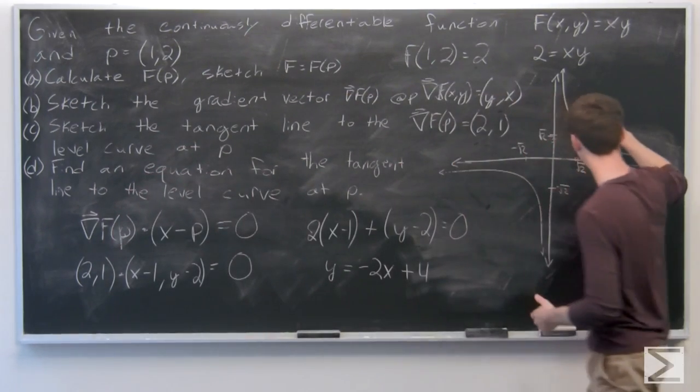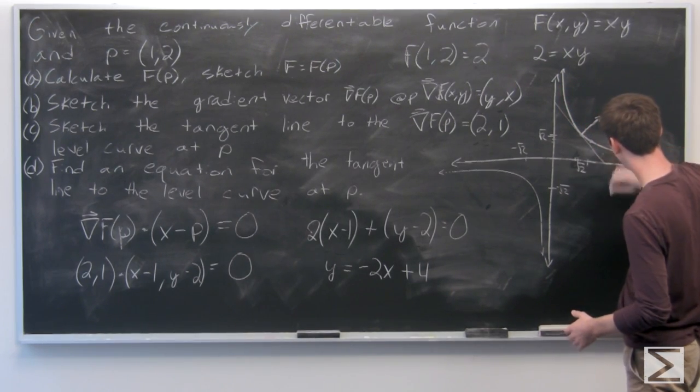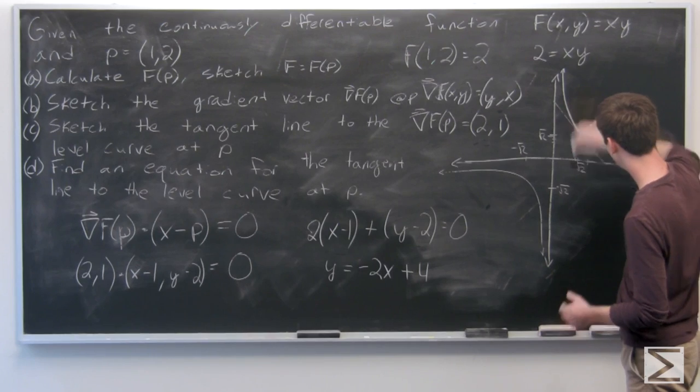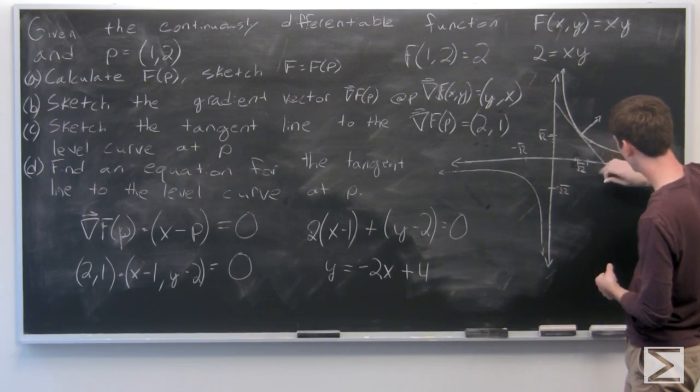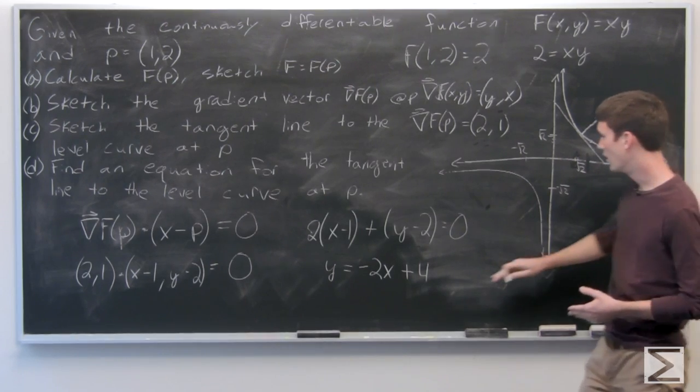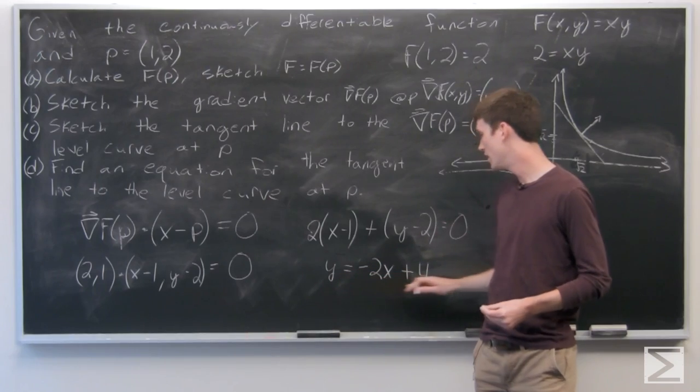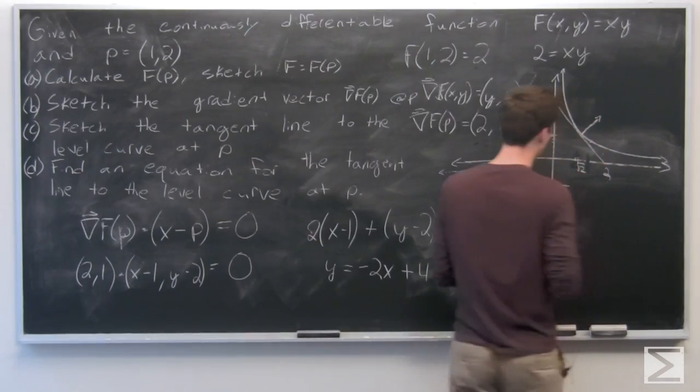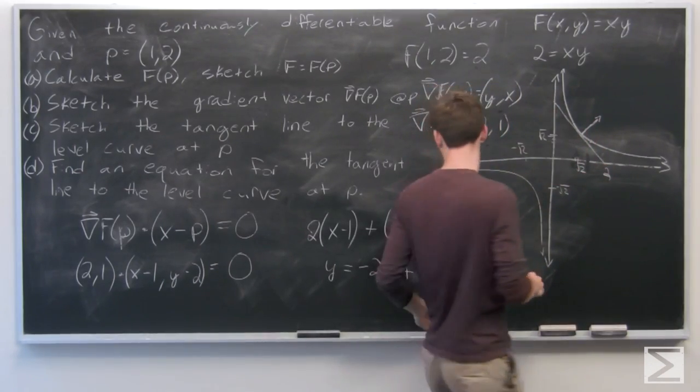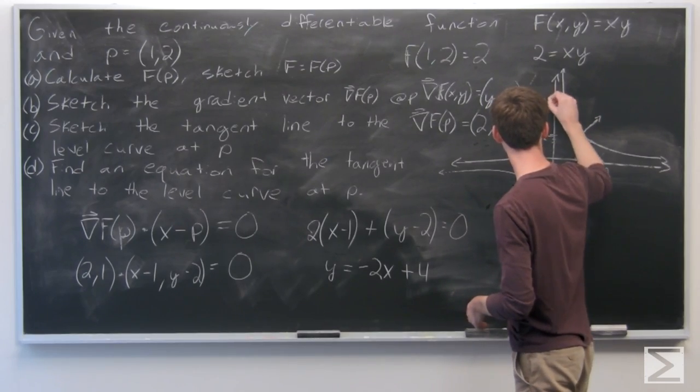And so we get the following tangent line. Where when y is 0, we get x is 2, so we'll put 2 right there. And when x is 0, y is 4, so we'll mark this as 4. So we have a tangent line like that.